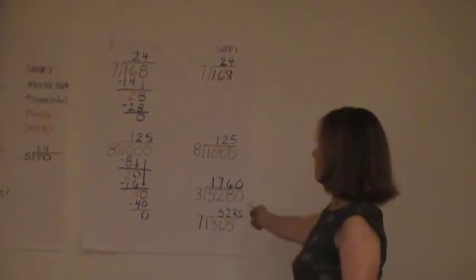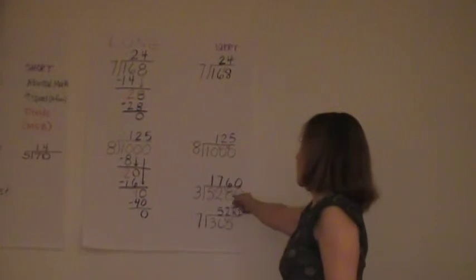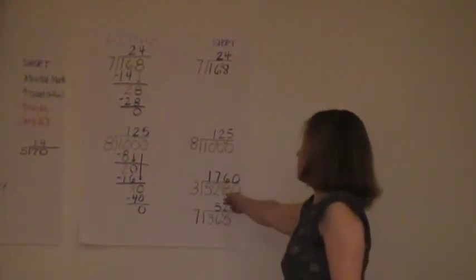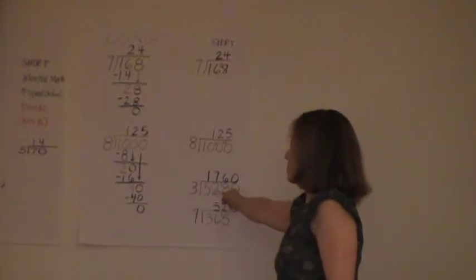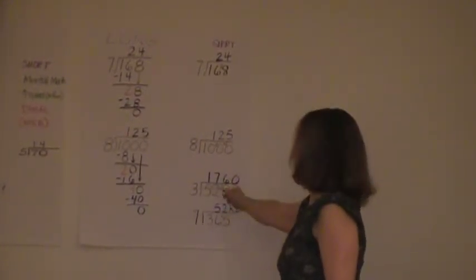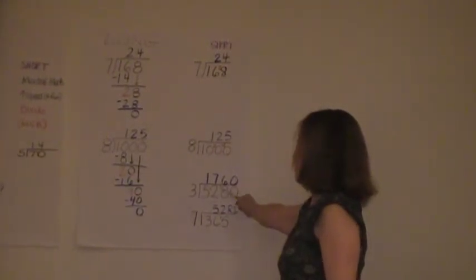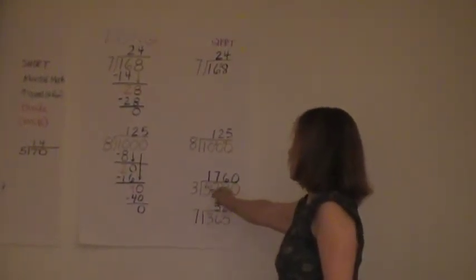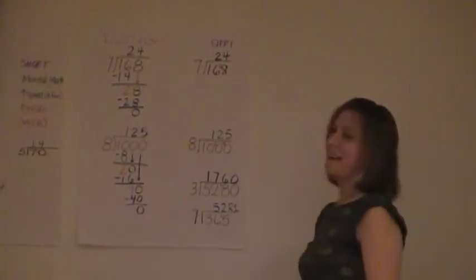Here are two more examples. This is 3 into 5280. This is the number of feet in a mile and what we're doing is calculating the number of yards. So 3 goes into 5 once, 5 minus 3 is 2, then our next problem is 3 goes into 22 seven times. 22 minus 21 gives you the 1 over here, 3 into 18 is 6 and then there's a 0 at the end.